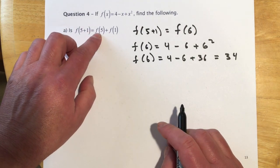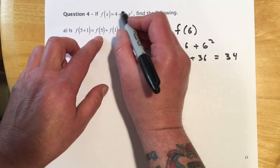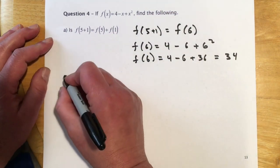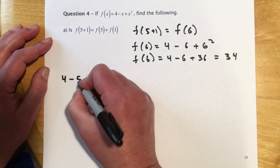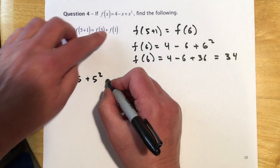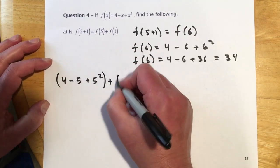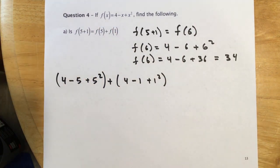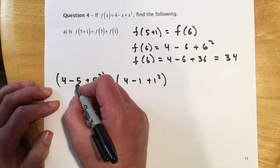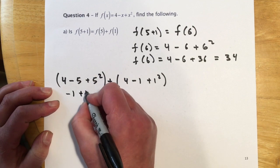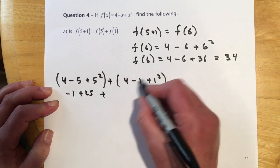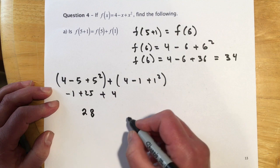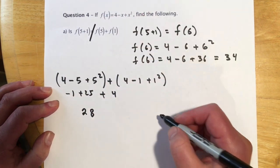And then if I find f of 5 plus f of 1. So this is saying plug a 5 in and then add to it the same thing with the 1 plugged in. So f of 5 would look like 4 minus 5 plus 5 squared. And then adding to that f of 1, so that will be 4 minus 1 plus 1 squared. And then just cleaning that up, 4 minus 5 would be negative 1 plus 25. And then minus 1 plus 1 cancel, so that's a 4. And it looks like we get 29 minus 1, we're 28. So we'd say no, they are not equal to each other.